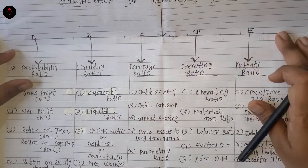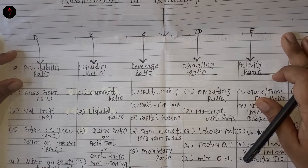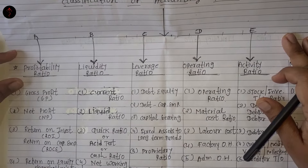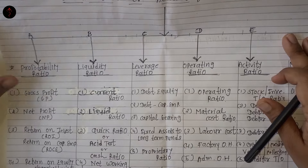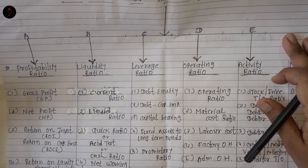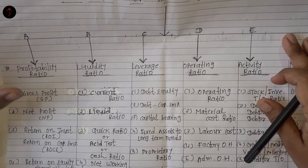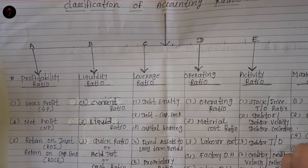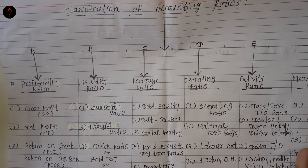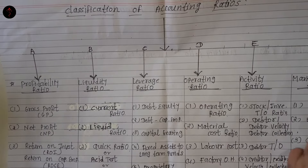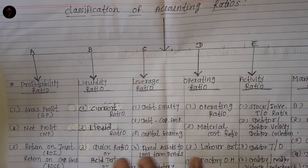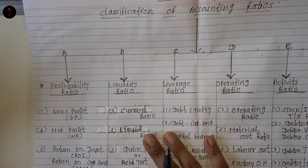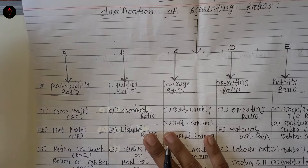Just have a look — कौन-कौन से categories में कौन-कौन से ratios आते हैं, what are the meanings of those ratios, और ratios जूनने के लिए जो formula यूज करना है, उसमें कौन सी चीज़ों का ध्यान रखना है. I have a plan to do 3 lectures for this, and in each lecture we are talking about 2 lines of ratios.